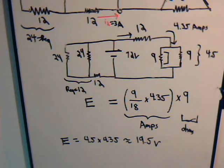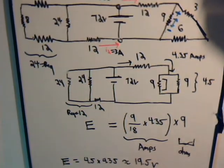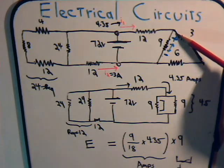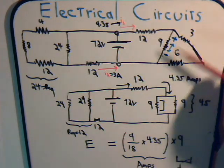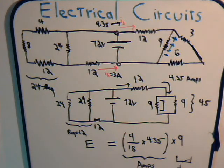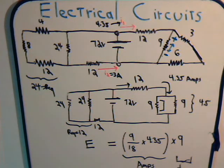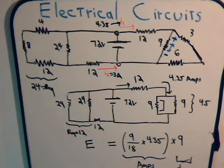The voltage drop in our triangle across this resistor, which is the same as this one, is 19.5 or 19.6 volts. So again, a relatively simple circuit. In the next videos we're going to look at the current mesh technique, then also do some problems with node analysis, and after that we'll have some videos on source conversions, which will set us up to consider Norton equivalent circuits and Thevenin equivalent circuits.